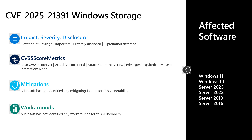Next up is CVE-2025-21391. This is an important elevation of privilege vulnerability in the Windows storage component. This one was privately disclosed, but exploitation was detected out in the wild. It has a base CVSS score of 7.1. The attack vector is local, the attack complexity is low, low privileges are required, and user interaction is none. There are no documented mitigations or workarounds, but I will point out that an attacker able to leverage this vulnerability would be able to delete targeted files from a system. Affected software is Windows 10 and 11 on desktop, as well as Server 2016, 2019, 2022, and 2025 on the server side.